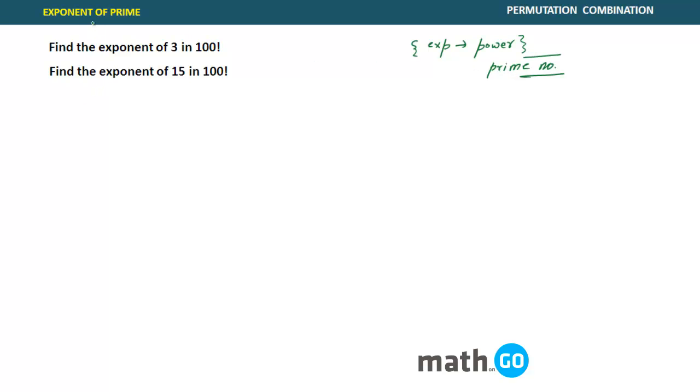Rather than say exponent of prime, I should say exponent of a prime in n factorial. For example, if I take this first problem, it says 100 factorial. So you want to find power of 3 in 100 factorial. This is the question. So how do you actually solve this? Let's see very interesting stuff.